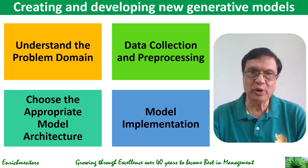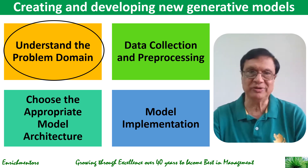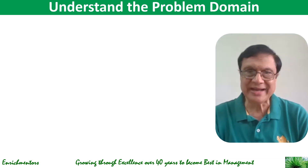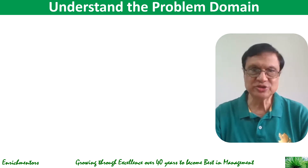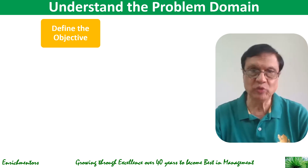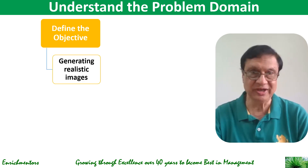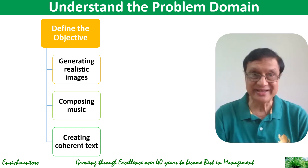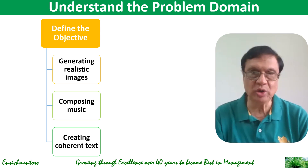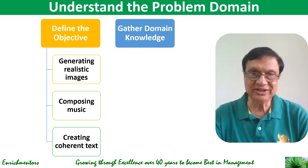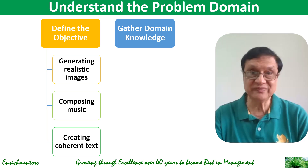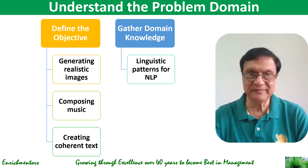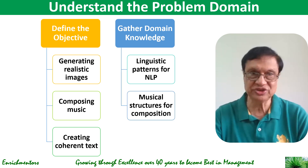Let's start with the first step: understanding the problem domain. There are two things you do here. The first is to define the objective — clearly define what you aim to achieve with the generative model. Is it generating realistic images, composing music, generating coherent text, etc.? The second is to gather domain knowledge, which differs across domains: music, images, and text each have their own specific requirements and characteristics.